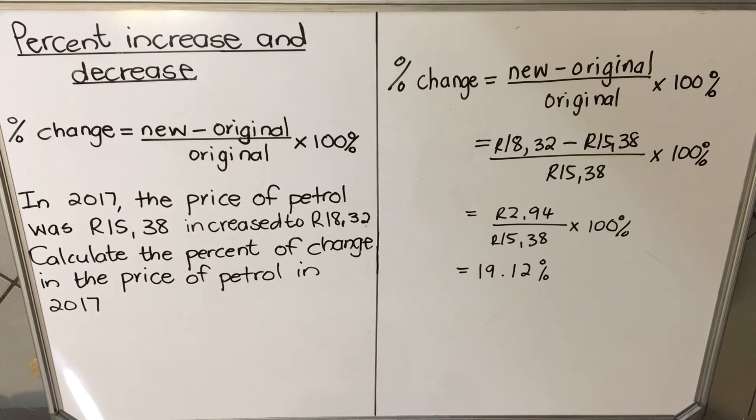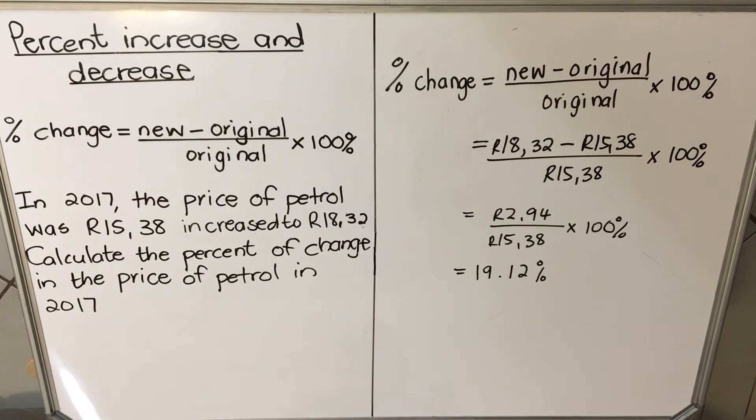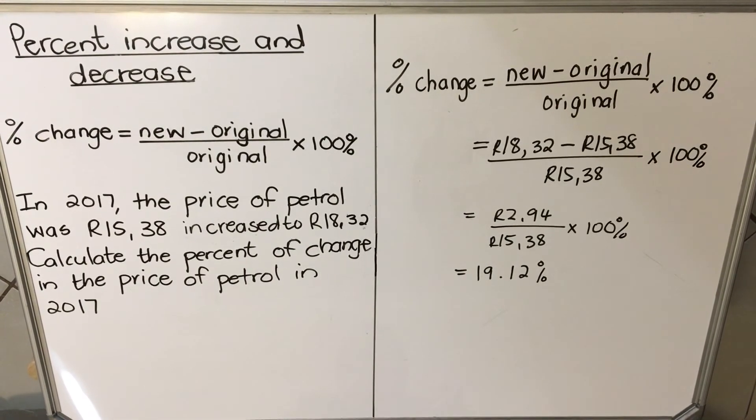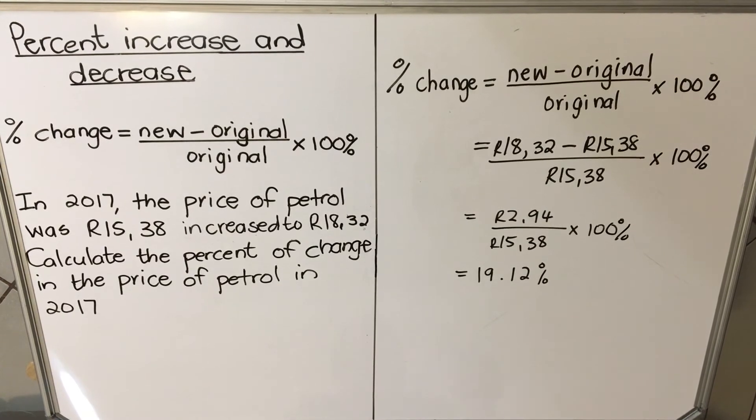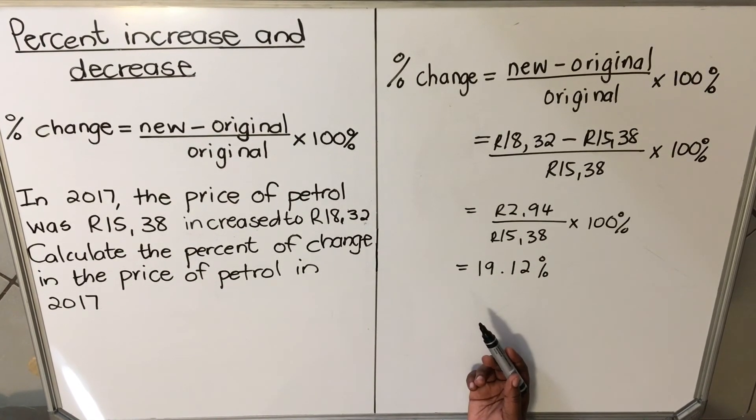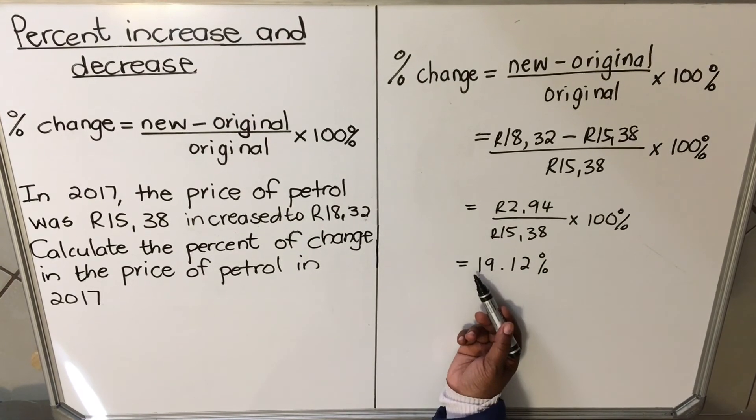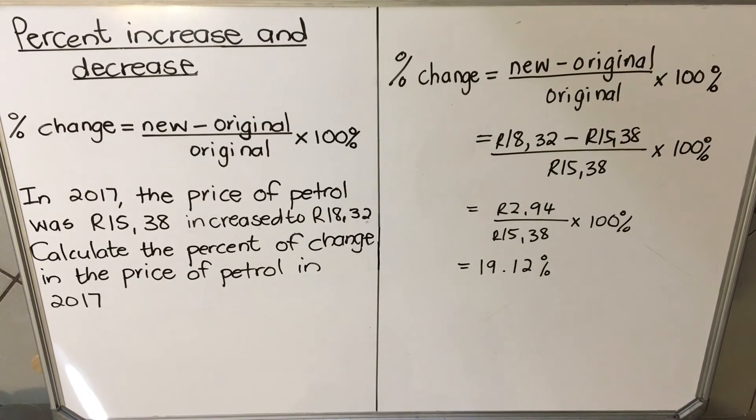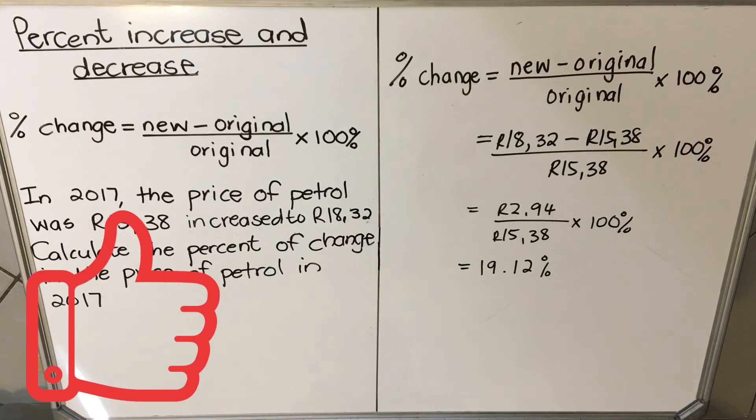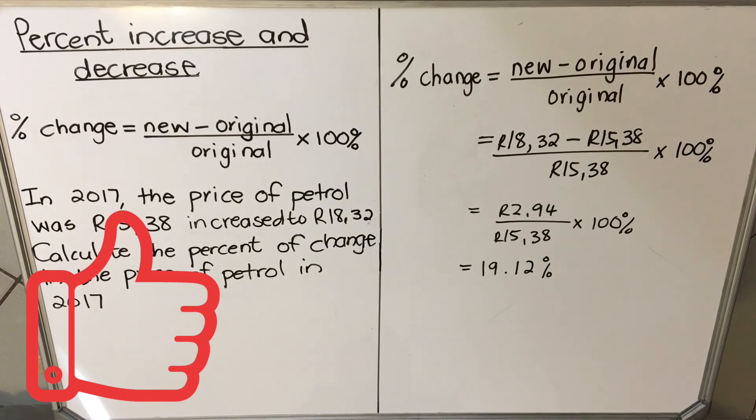So this is how much the price has increased from R15.38 to R18.32. When you get an answer that is negative it means the price has decreased. When you get an answer that is positive it means the price has increased. So that's how we deal with negative and positive.